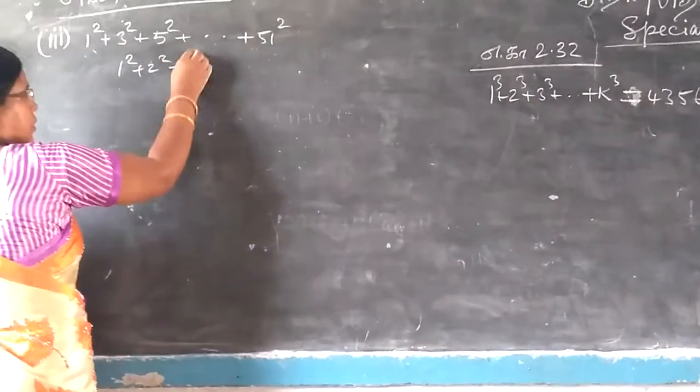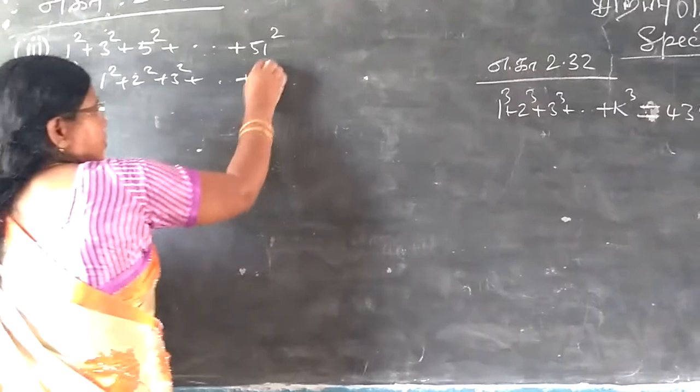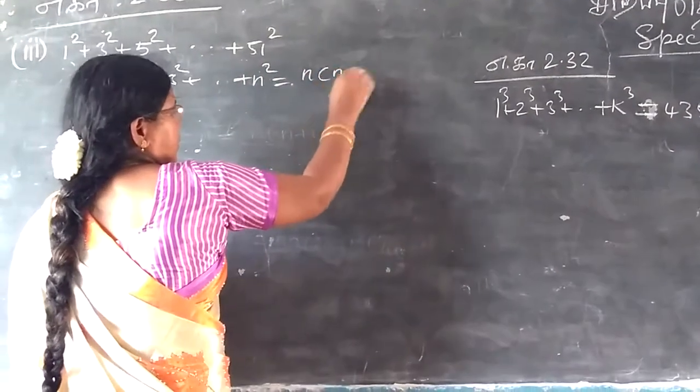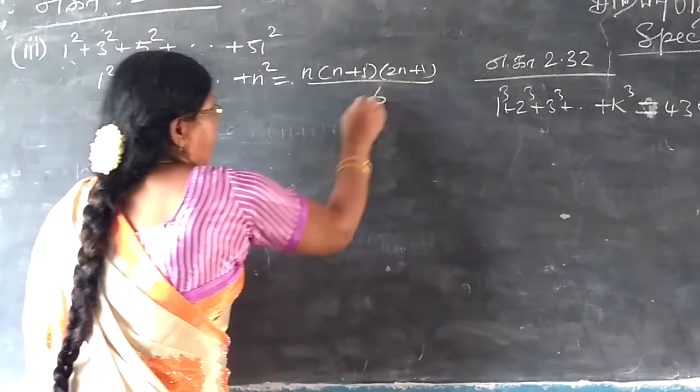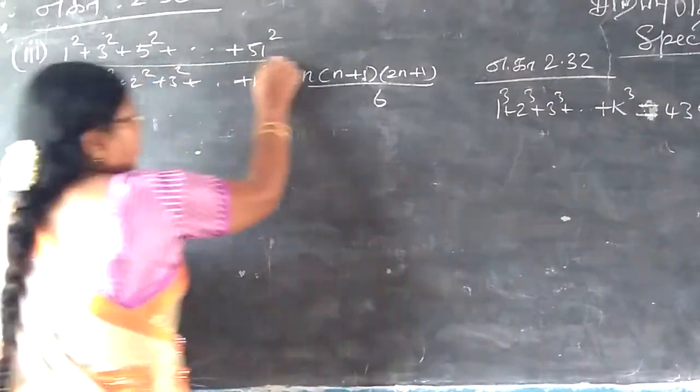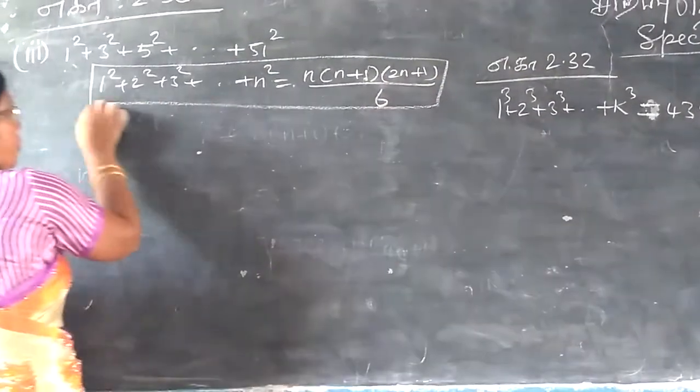1 square, 2 square, 3 square, etc. N is the first one, this is the first one by 3.